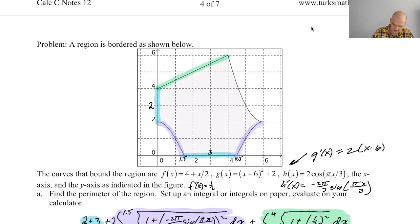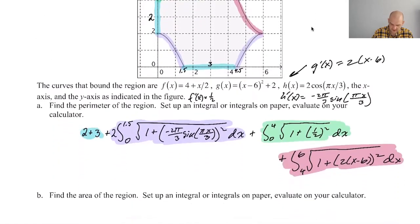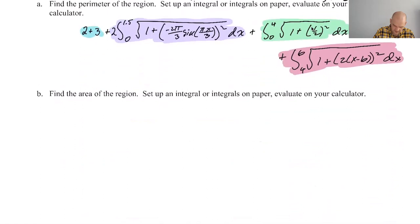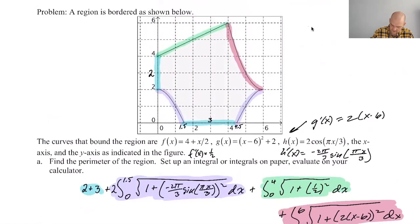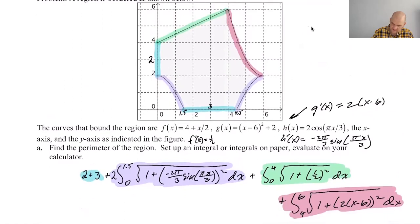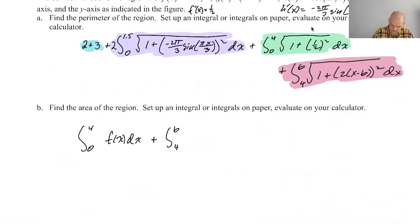So first I forgot to highlight this. There we go. So first I'm going to find that big trapezoidal region. It's the integral from zero to four of F of X DX plus from four to six of G of X, I guess. How can that be G of X? Oh, cause yeah. G of X DX.